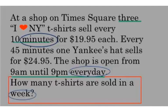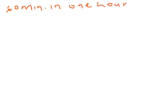Now let us work. What is the information given and what do we need to solve the problem? There are 60 minutes in one hour. From 9am to 9pm is 12 hours, so 9am to 9pm equals 12 hours.